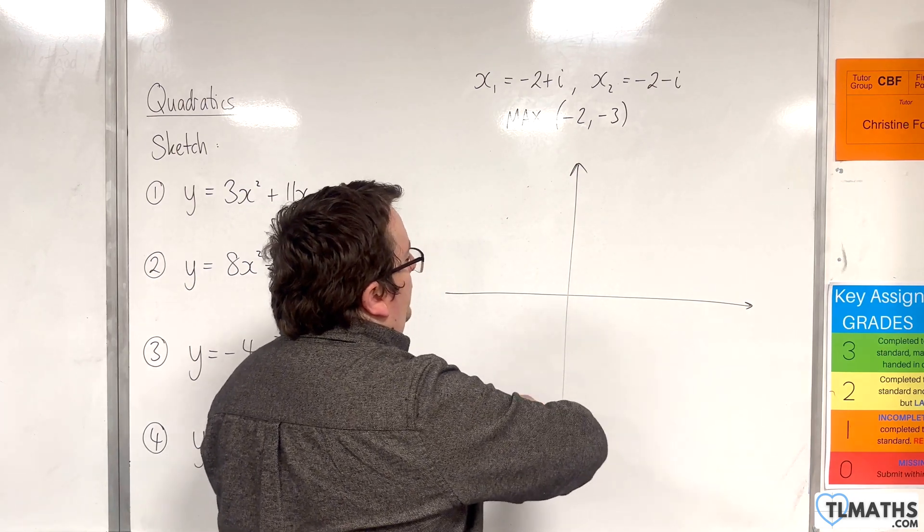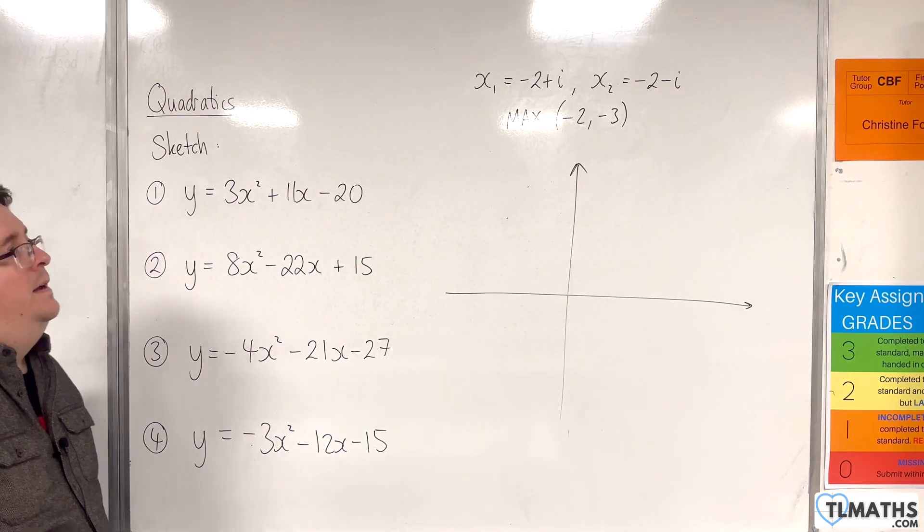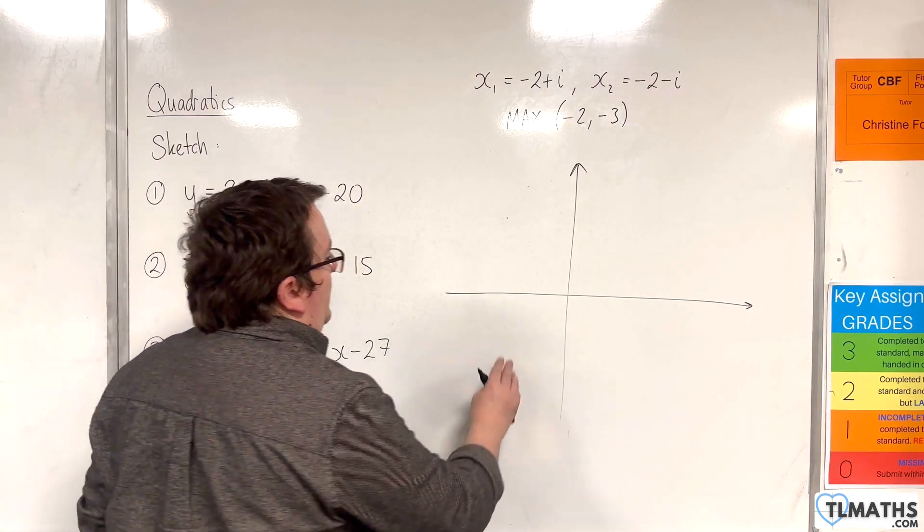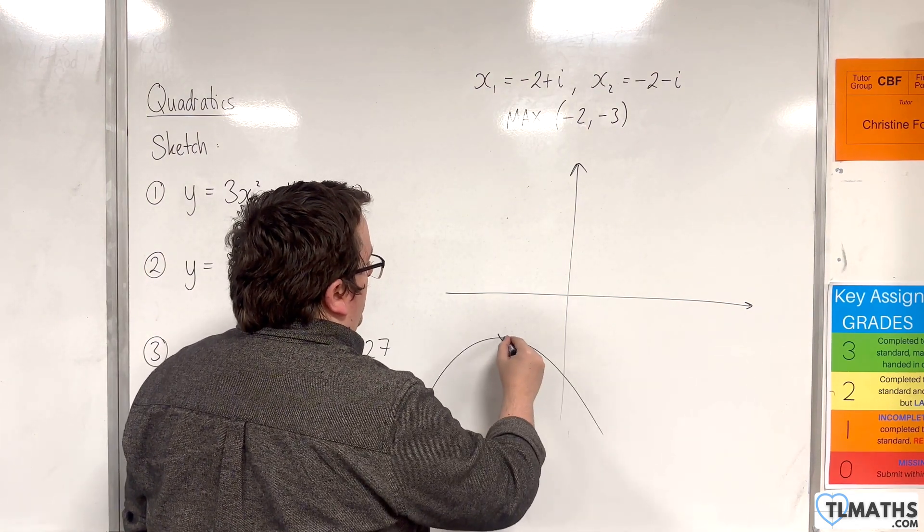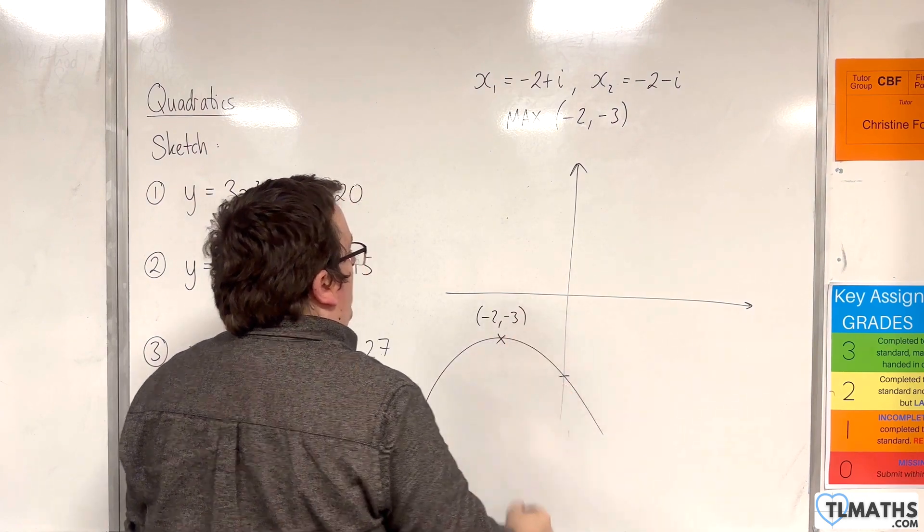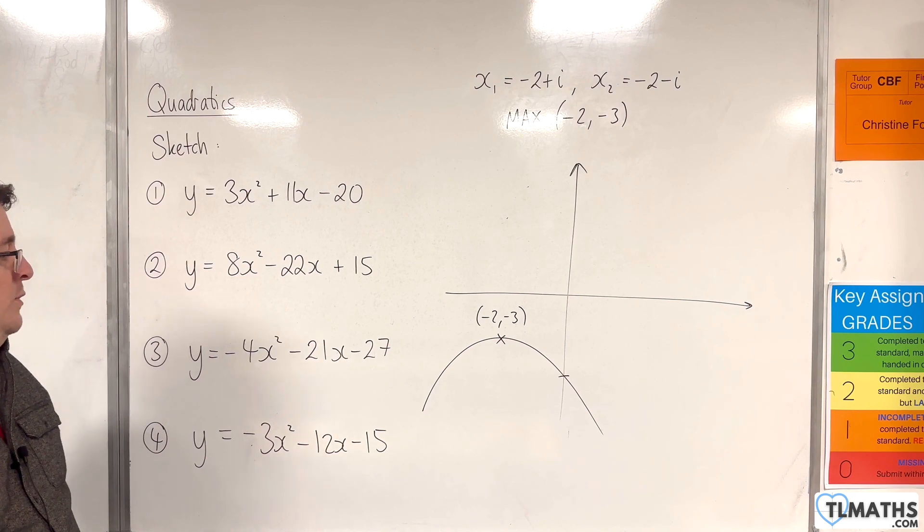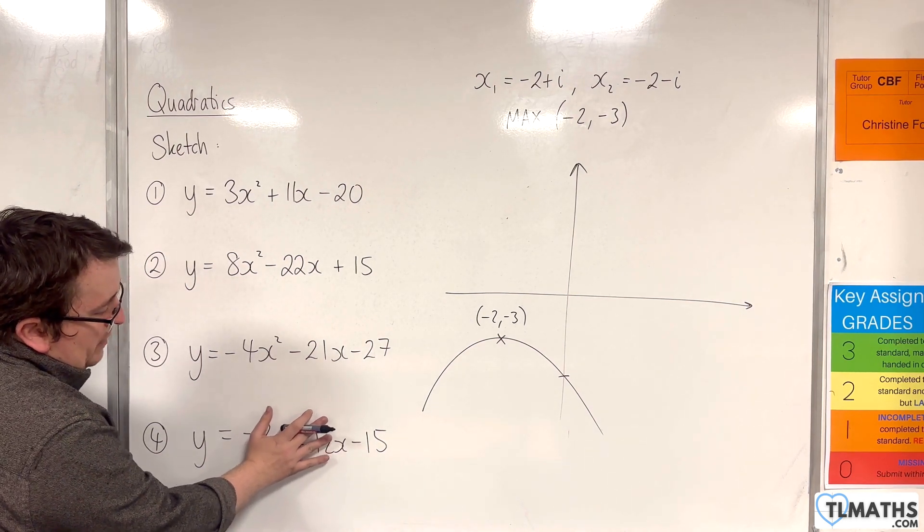We know that the maximum point is at -2, -3, so that's in this quadrant here. The parabola needs to do something like that, where the maximum point is -2, -3. And the only other point we're interested in is where it crosses the y-axis, which is when x is 0, so that will be when y is equal to -15. And so that is our sketch for number 4.